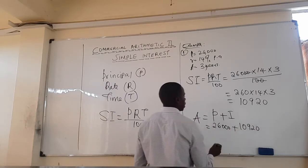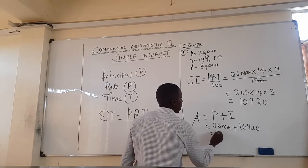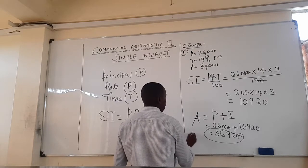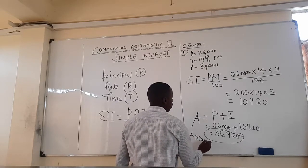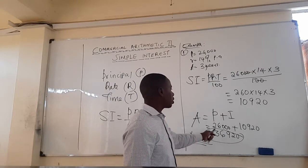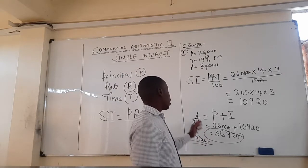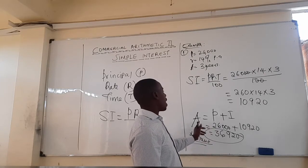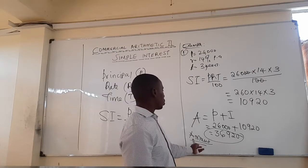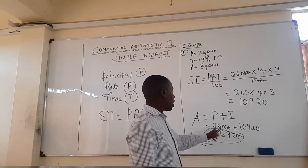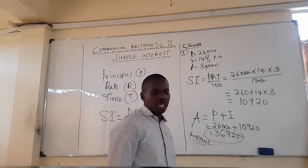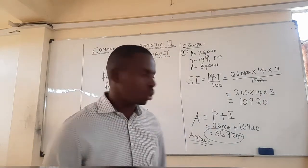Amount equals 26,000 plus 10,920, which gives us 36,920. This is the total money the person has at the end of the period — he initially had 26,000 but at the end of three years the total amount is 36,920.